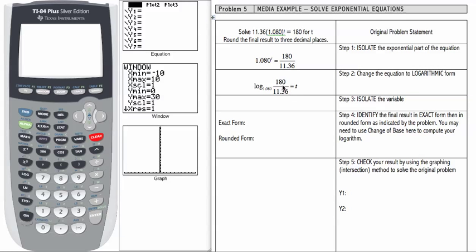Looks a little complicated because of this fraction, the 180 over 11.36, but you can trace it back to the final result in step one. The base 1.080 raised to the t power equals 180 over 11.36, so we have done the transformation correctly.